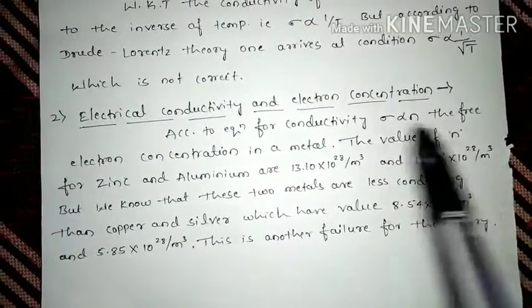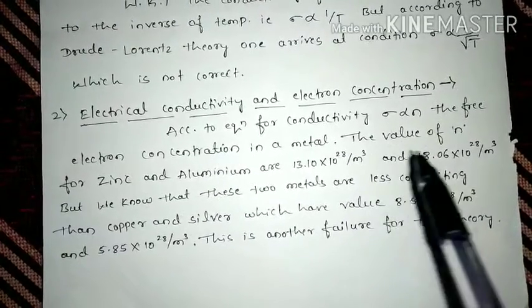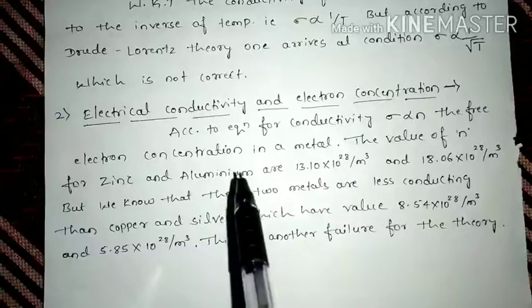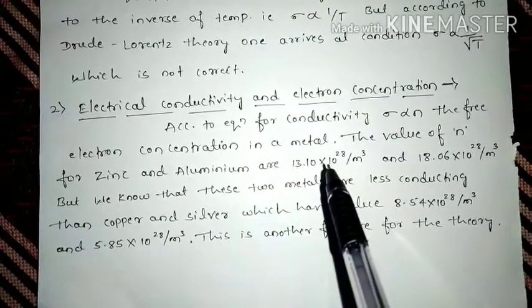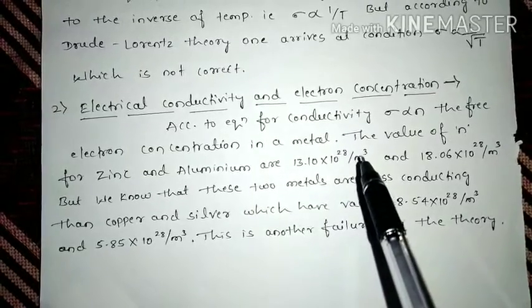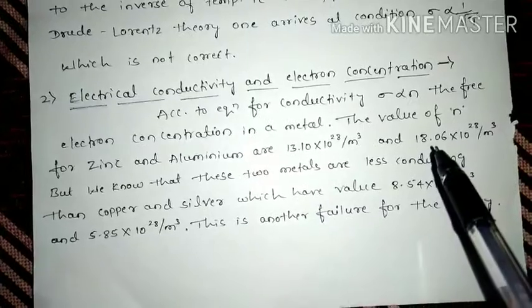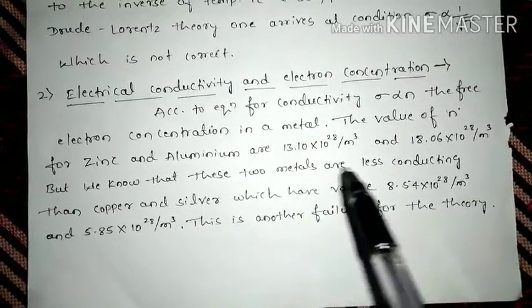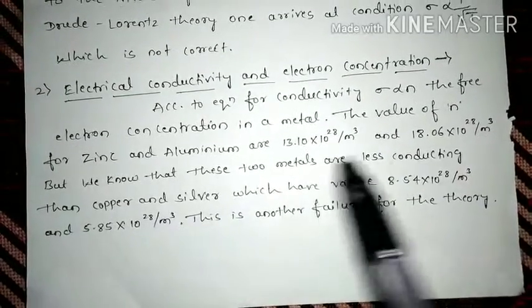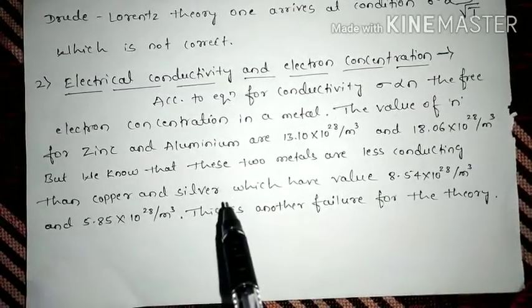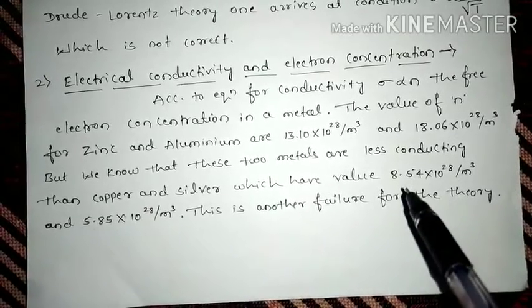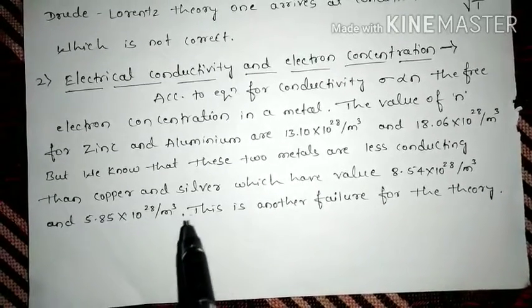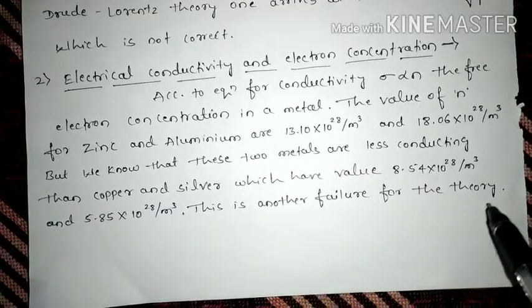But in some metals, the value of n for zinc and aluminum, which are poor conductors of electricity, the zinc has free electron value 13.10×10²⁸ per meter cube, and aluminum has 18.06×10²⁸ per meter cube. But we know that these two metals are less conducting. Zinc and aluminum are poor conductors compared to copper and silver. The copper and silver have free electron values 8.54×10²⁸ and 5.85×10²⁸ per meter cube. This is another failure for the theory.